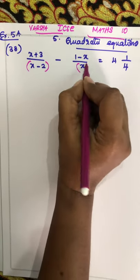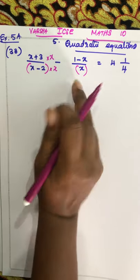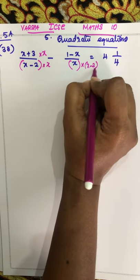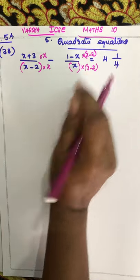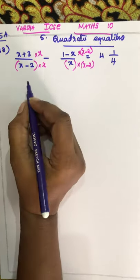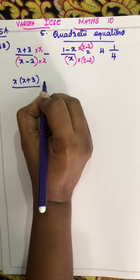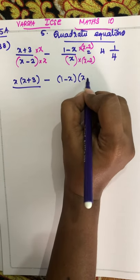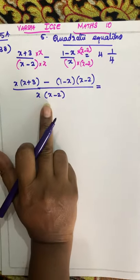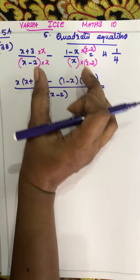So to equalize this denominator, you have to multiply x into x. This x into x, and this is into x minus 2, into x minus 2. In the numerator: x into x plus 3, minus — here this is 1 minus x — minus x into x minus 2, all over x into x minus 2. Now the two denominators are both equal, so we can write it one time.